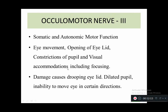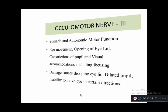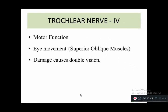The third cranial nerve is the oculomotor nerve. It has somatic as well as autonomic motor functions and is responsible for eye movement, opening of the eyelid, constriction of the pupil, and visual accommodation including focusing. Damage leads to drooping eye, dilated pupil, and inability to move the eye in certain directions. The fourth cranial nerve is the trochlear nerve — pure motor function — responsible for eye movement, particularly of the superior oblique muscle. Damage causes double vision, called diplopia.